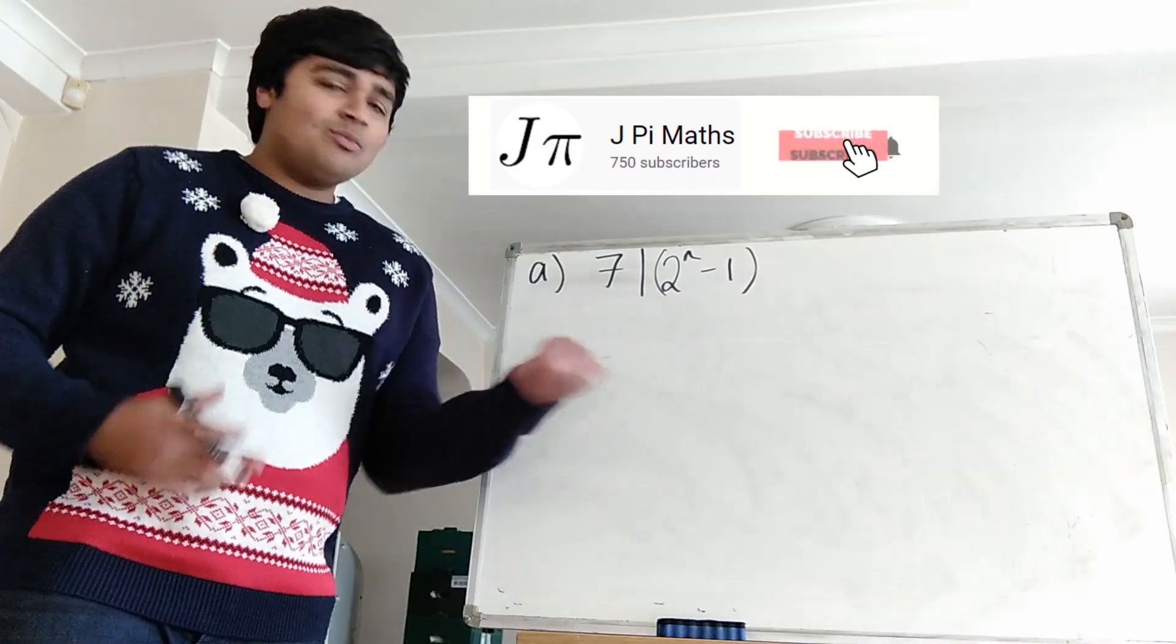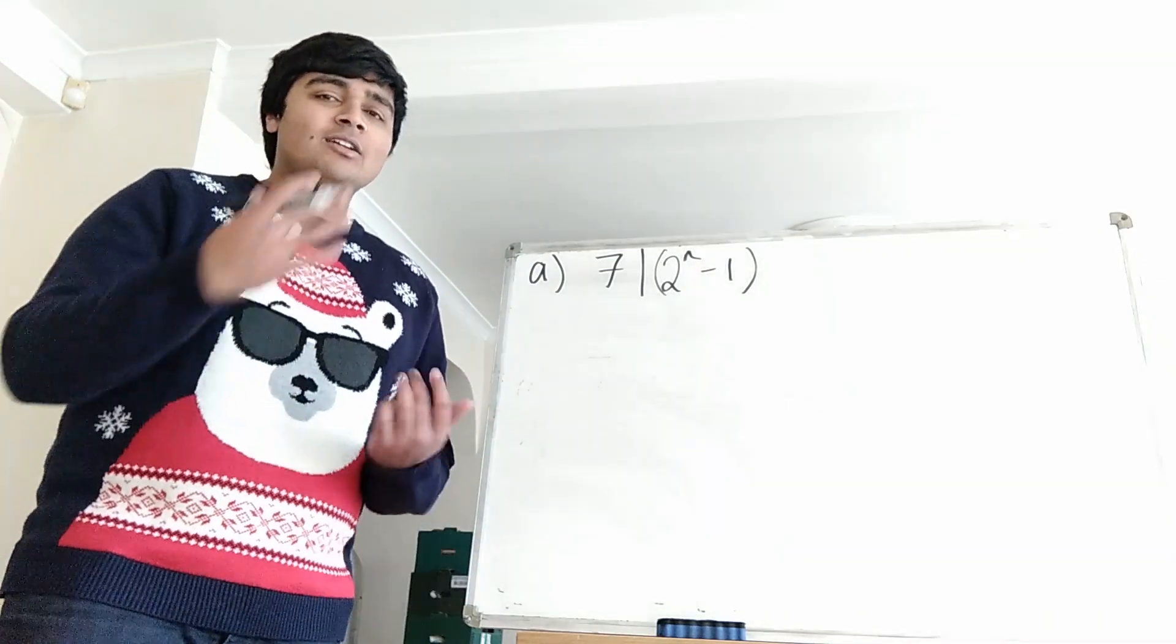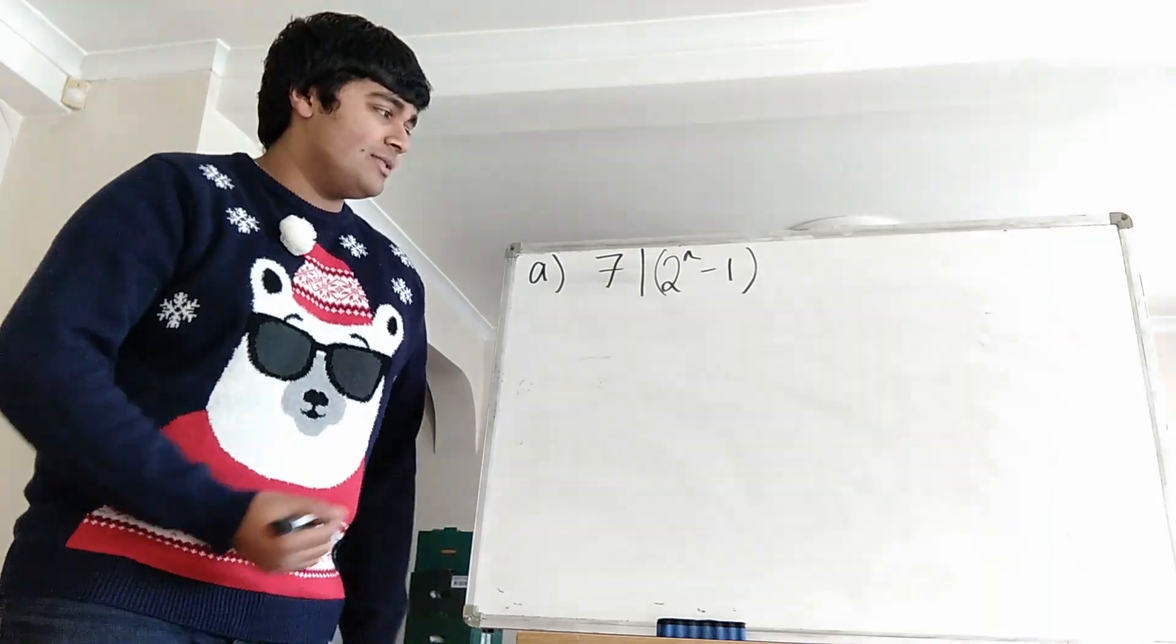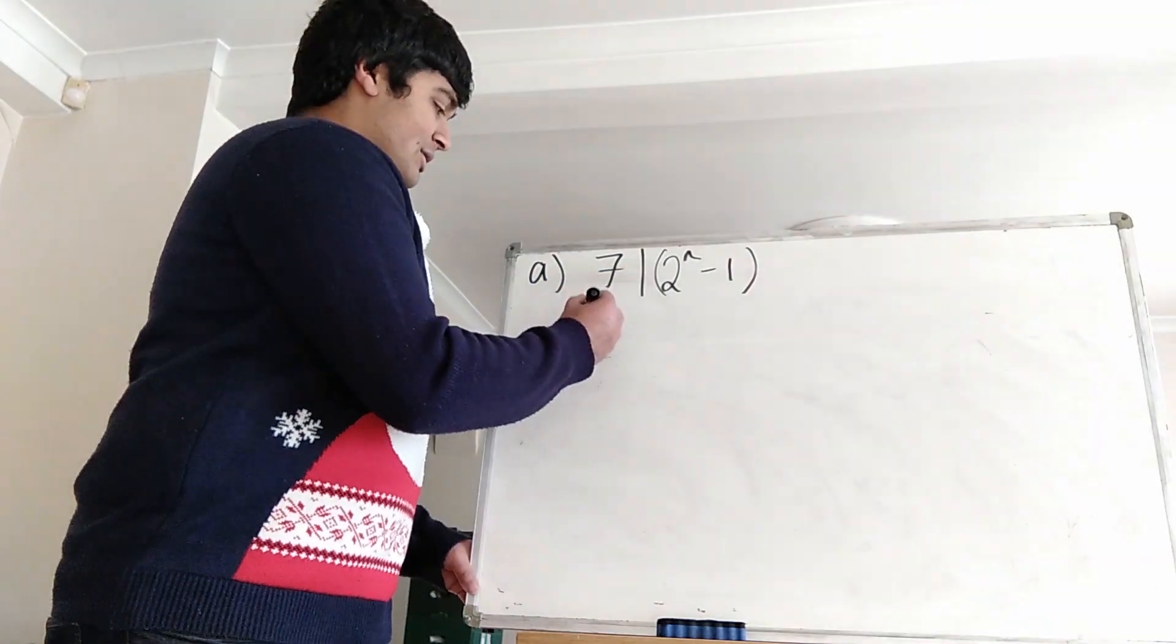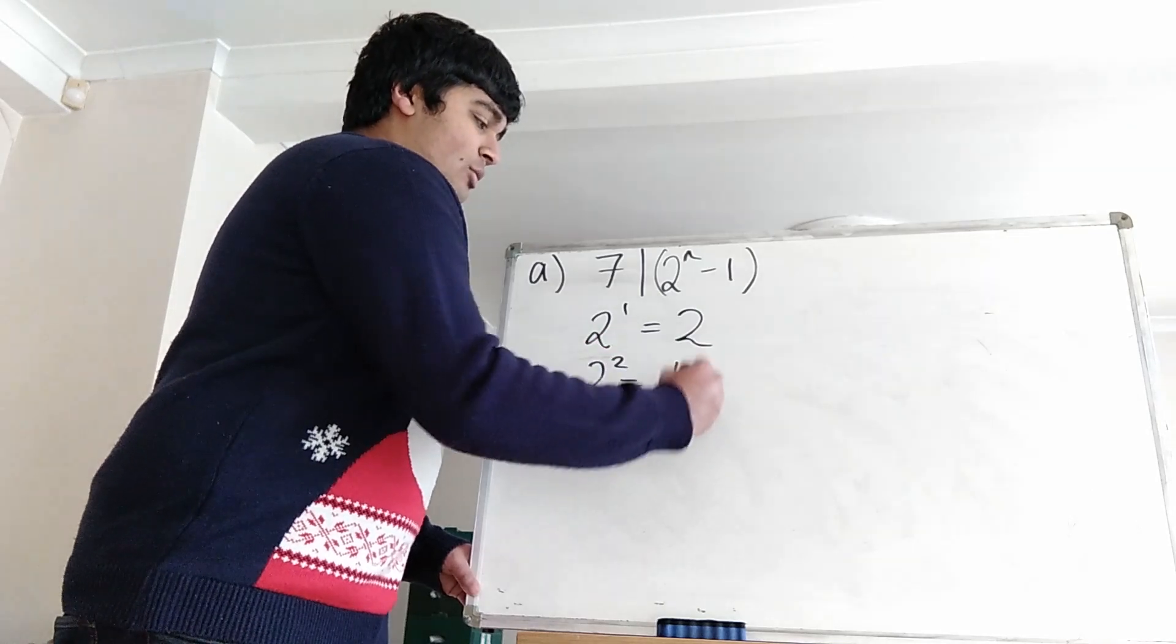Okay, so to answer part A, what we're going to do is look at the powers of 2 mod 7. So the remainder when you divide 2 to the n by 7. So let's look at the first one. First power of 2, so 2 to the 1, that's just 2. 2 squared, that's 4.